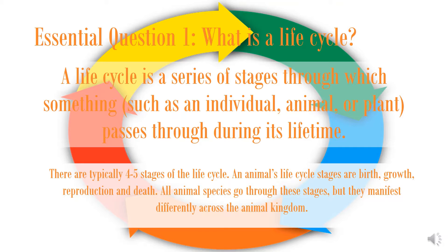What is a life cycle? A life cycle is a series of stages through which something, such as an individual animal or plant, passes through during its lifetime. There are typically four to five stages of the life cycle. An animal's life cycle stages are birth, growth, reproduction, and death. All animal species go through these stages, but they manifest differently across the animal kingdom.